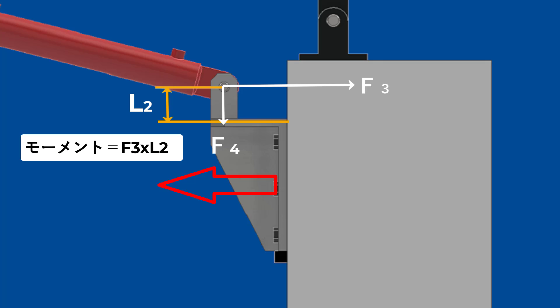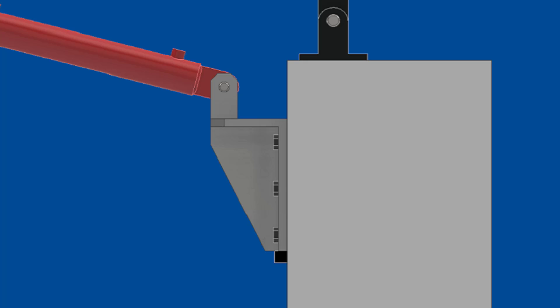F3からこの右上の角の距離をL2とすると、F3×L2というモーメントが発生します。それに対して、ボルトが縦に3本並んでいるうちの、真ん中のボルトに引っ張り力が発生すると考えます。この引っ張り力を計算して、ボルトにかかる応力を算出していきます。ご視聴ありがとうございました。